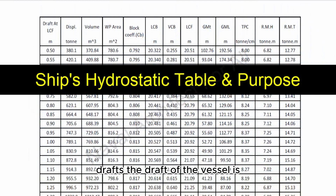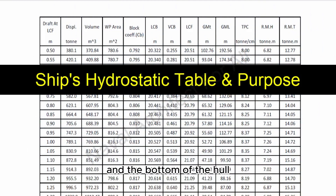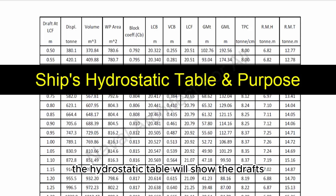Drafts. The draft of the vessel is the vertical distance between the waterline and the bottom of the hull. The hydrostatic table will show the drafts at various displacements or loading conditions.